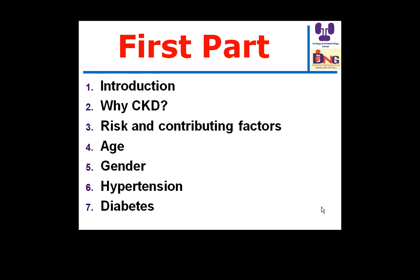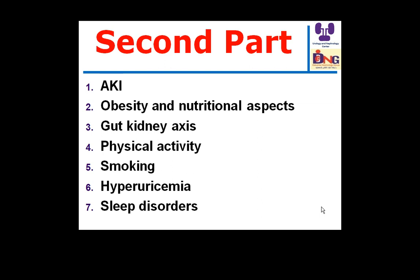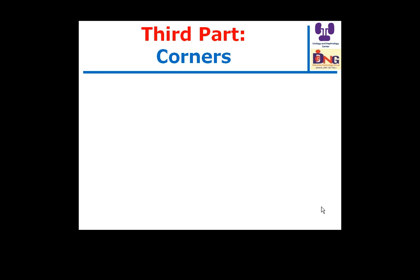In the second part, I mentioned seven factors: acute kidney injury and its relationship to chronic kidney disease, obesity and nutritional aspects, blood kidney access, physical inactivity and chronic kidney disease progression, smoking, hyperuricemia, and sleep disorder. In the third part, I'm going to discuss metabolic acidosis and its relationship to chronic kidney disease and CKD progression.